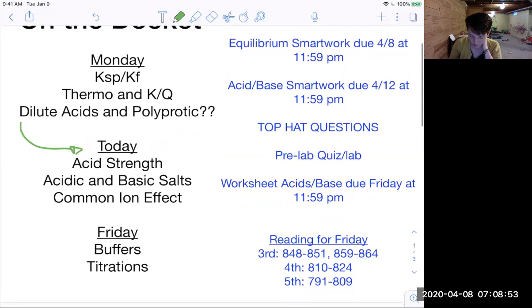Just to remind you, Monday of an exam. To prepare for that, you have two smart works coming up due. The equilibrium smart work is due tonight at 11:59 PM. And then you have your acid-base smart work that is due Sunday night before you take the exam. I do want to do some kind of electronic review session. I don't really know what this is going to look like, but it should be fun. I will try to get your review for you posted tomorrow.